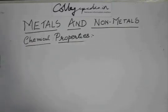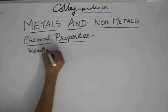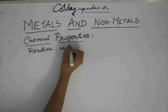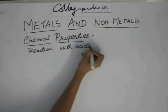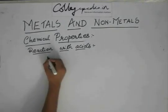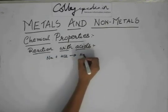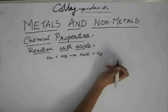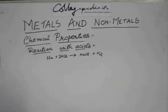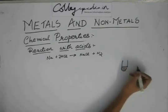Then we have reaction with acids. This reaction with acids is like Na + HCl gives NaCl + H2, simple, very simple. If you have HCl and you dip a piece of metal, it will give MCl2 or MCl or whatever plus H2.